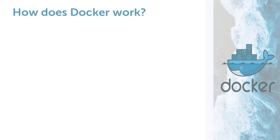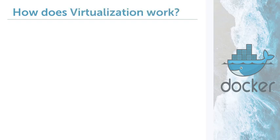How does Docker work on a lower level? Before we get a closer look at how containerization and implicitly Docker work, let's make sure that we understand how virtualization or virtual machines work. This is best understood with an example. Let's imagine we have a process, some piece of code which is running on a normal computer with a normal operating system.